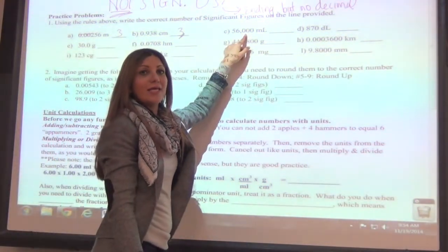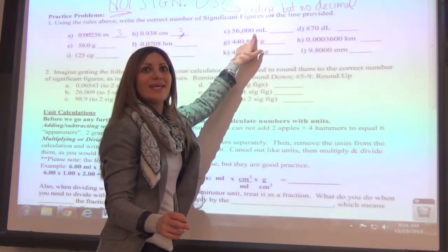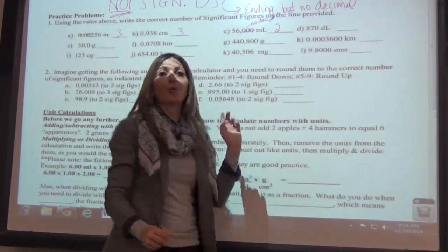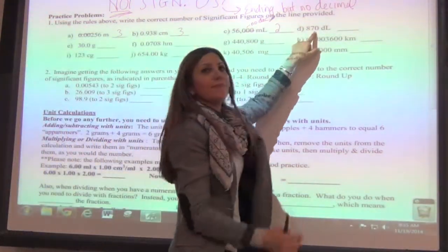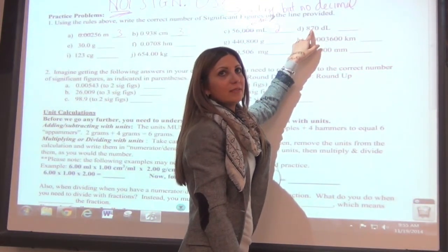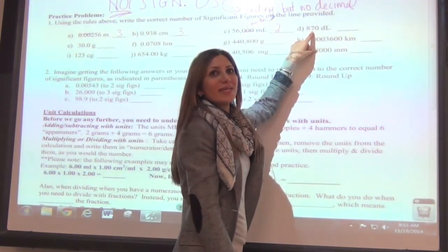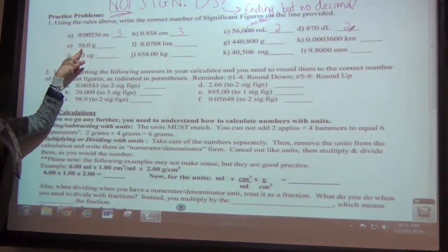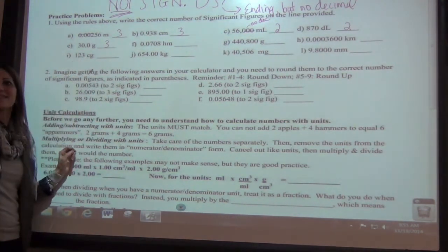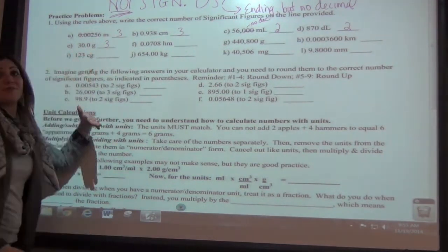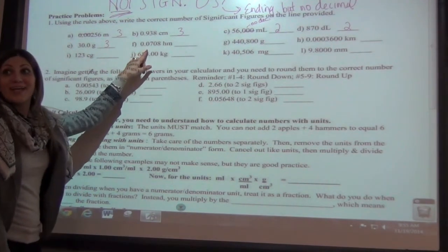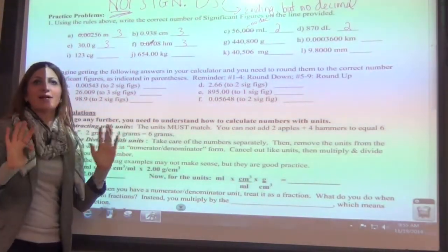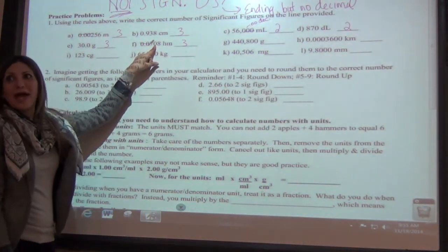Next one: three sig figs. Why didn't you count that zero? Because it's to the left — left zeros don't count. How about this one — zeros to the right with no decimal. Do those count? No. Why not? No decimal. So how many sig figs? Two. Those don't count because there's no decimal. If there were a decimal, they would count. Next: two sig figs — no decimal. Next: three sig figs — why are those significant? There is a decimal. Next hard one: three sig figs — the ones on the left don't count; the middle zero is trapped, so it counts.